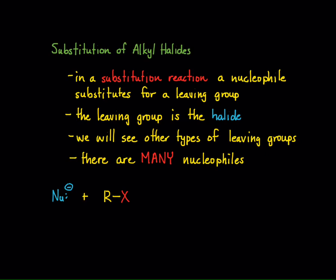So with alkyl halides, X is a halide, and the halide is a good leaving group. You get a substitution reaction that produces this now leaving group. So oftentimes you'll see throughout, instead of X, you'll see LG — and I showed that to you at the very beginning of this video series.